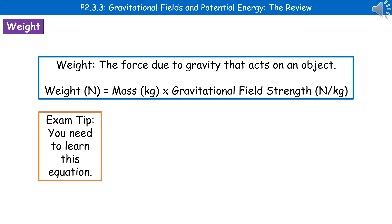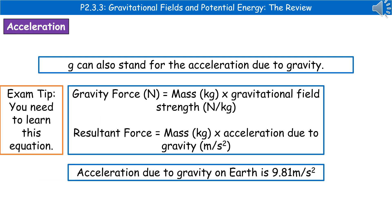The next thing we need to understand is what we mean by weight. People always mix up the distinction between mass and weight. Mass is the amount of stuff something is made from — it's in kilograms. Weight is the force due to gravity that acts on an object — it's in newtons. Another formula to learn: weight equals mass in kilograms times the gravitational field strength. Note that G can stand for gravitational field strength, but it can also stand for the acceleration due to gravity.